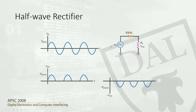During the positive half cycle, if the diode is forward biased in this configuration, you will receive this output. And if you flip it 180 degrees, you will see this as an output.